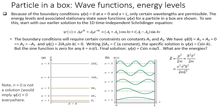The energy eigenvalues are E equal to p squared over 2m, equal to h-bar squared k squared over 2m, which equals n squared pi squared h-bar squared over 2mL squared. We can plot these energy eigenvalues on the y-axis. The energies differ as 1, 4, 9, 16, 25, 36 times E1, corresponding to n equal to 1, 2, 3, 4, 5, 6.